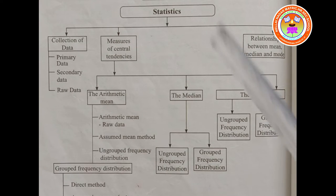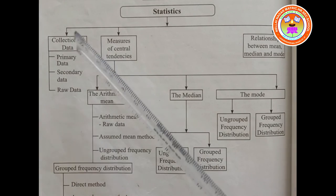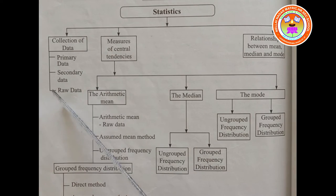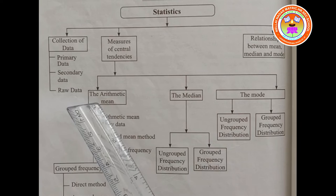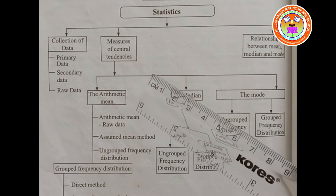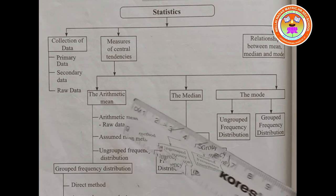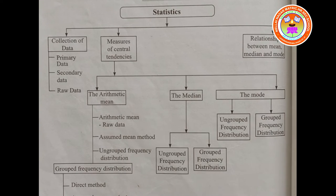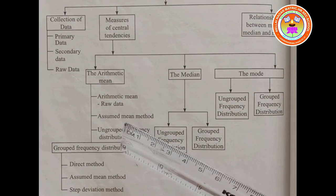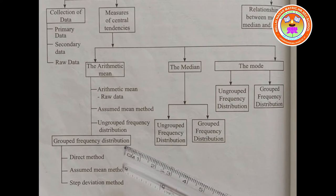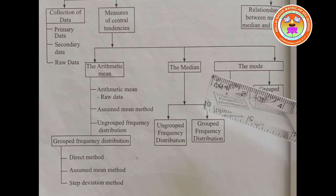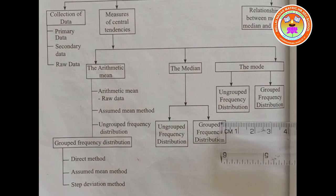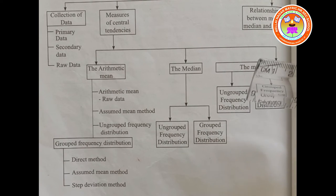In statistics, that is collection of data, you will be having primary data, secondary data and raw data. Then measures of central tendency: you will be having arithmetic mean, the median and mode. In arithmetic mean you will be having raw data, assumed mean method, ungrouped frequency distribution, grouped frequency distribution — that is direct method, assumed mean method and step deviation method. Then from median you will be having ungrouped frequency distribution and grouped frequency distribution. Then mode: you will be having ungrouped frequency distribution and grouped frequency distribution.